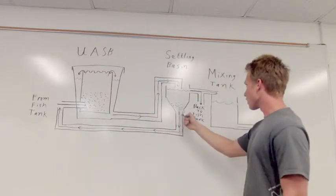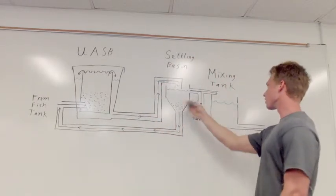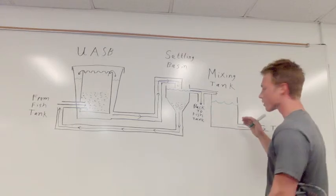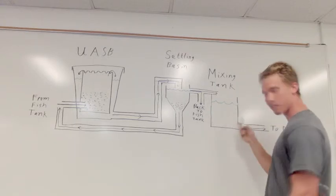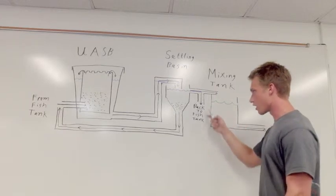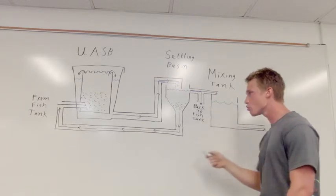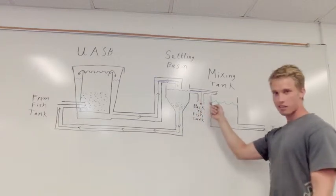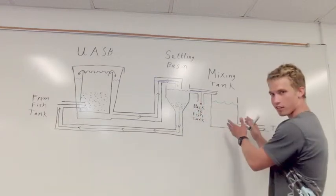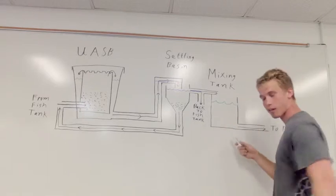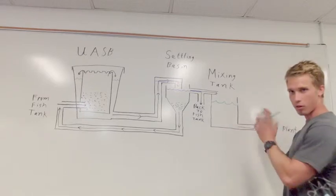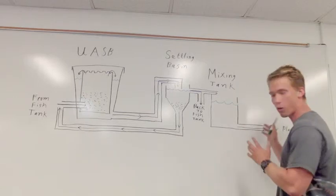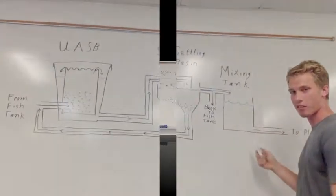Once it comes through here, it goes toward our mixing tank. But before that, if we have too much water in our plant system, we can run it back to the fish tank. Once it goes to the mixing tank, that's the point of no return where it stays in our plant system. In our mixing tank, we can add any chemicals we want without worrying about harming the fish.